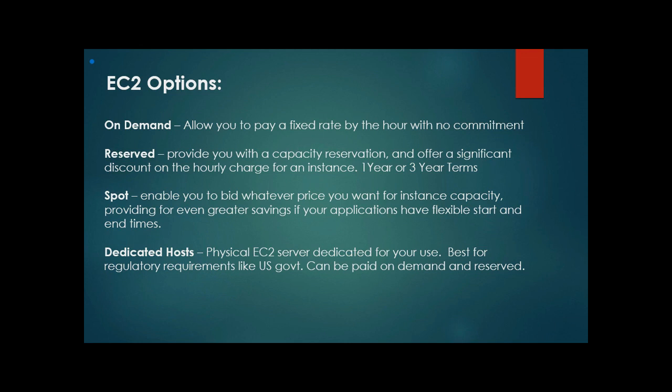Next is Spot. Amazon sets a bid price — say 5 cents per hour — and if you're interested you bid a higher price. If you bid 6 cents per hour, you get the machines launched in your account. But if someone else bids higher or Amazon raises its bid price, your machines will be automatically terminated. So you need to choose carefully — you cannot run critical applications on Spot instances because you never know when the machines will be terminated.